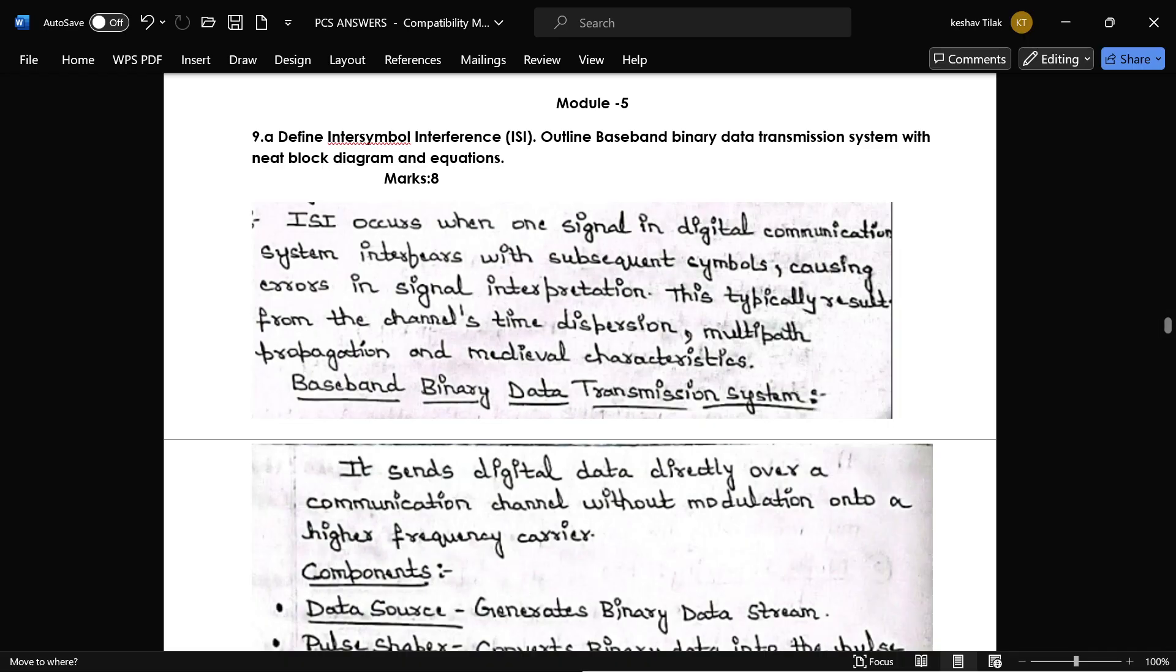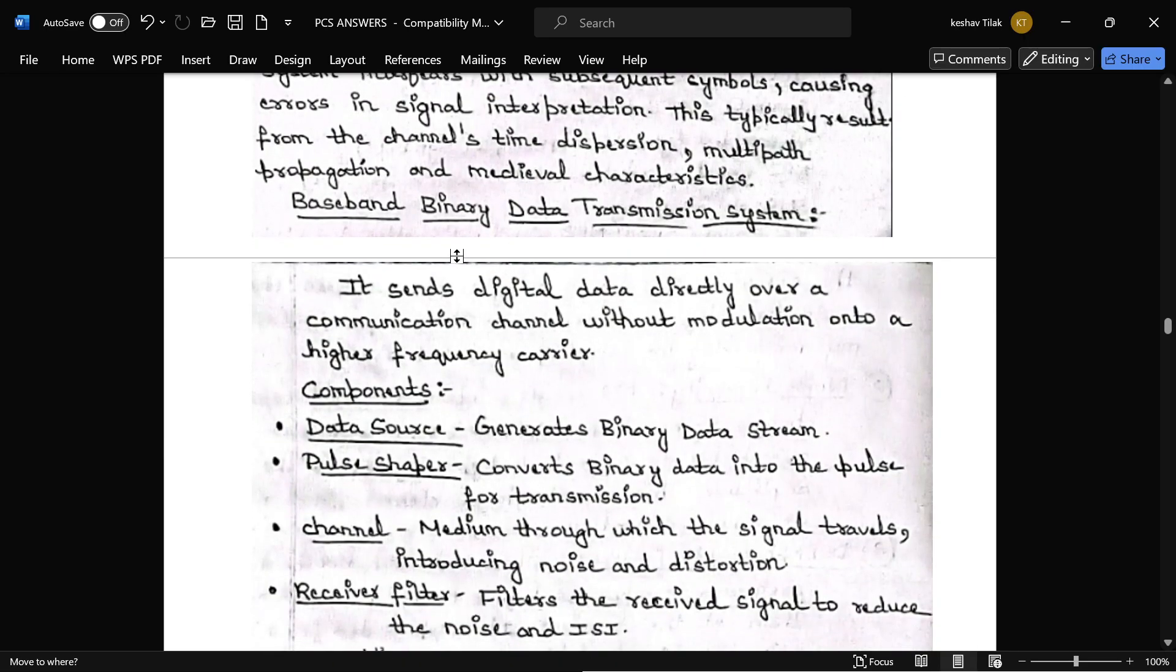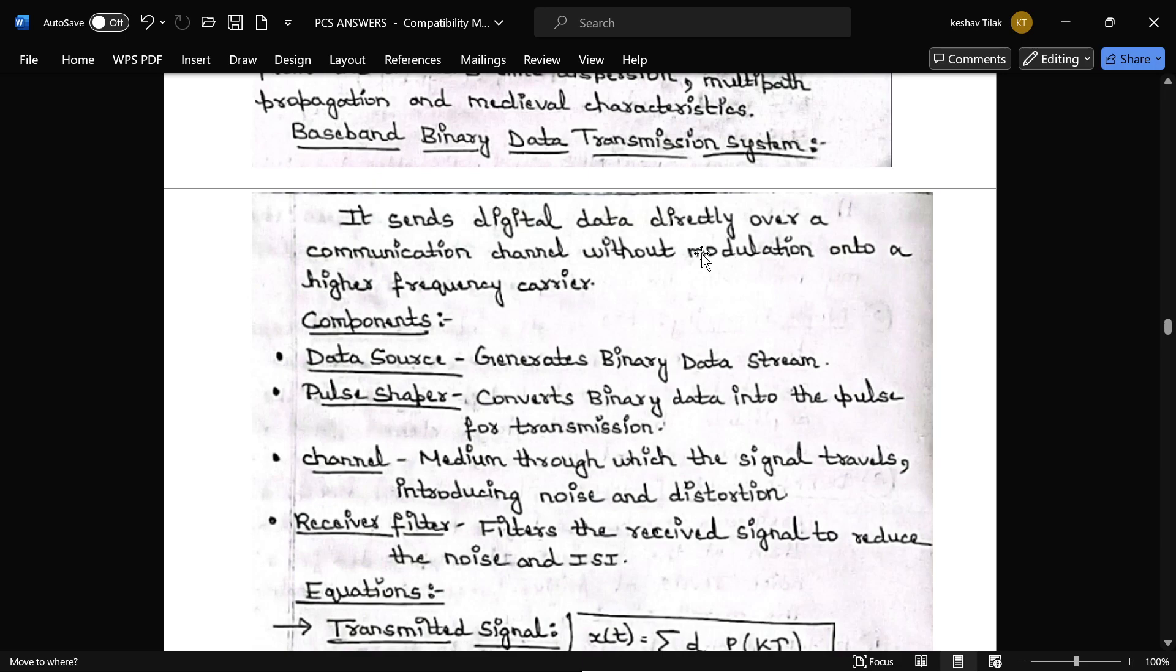Next question is 9A from Module 5. Define ISI. Outline Baseband Binary Data Transmission System with Neat Diagram and Equations. So this is the explanation for definition for ISI. And Baseband Binary Data Transmission System mainly consists of 4 components.